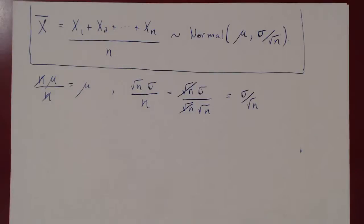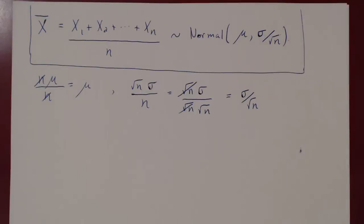As far as theoretical results go, this is really it. In our next video, we will consider examples where we ask for the probability of a normal random variable, standardize to make it the standard normal, and then read the probabilities from the table of the standard normal distribution.